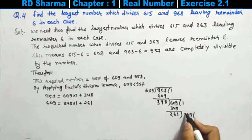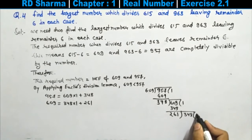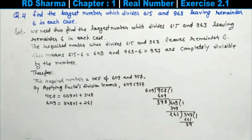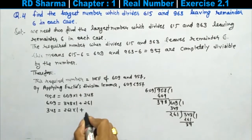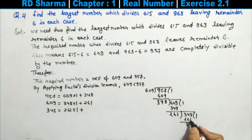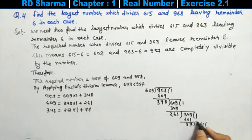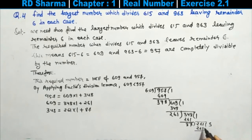Now we divide 348 by 261. We get 348 equals 261 into 1 plus 87. Then we check: 261 divided by 87 — since 87 times 3 equals 261, the remainder is 0. So 261 equals 87 into 3 plus 0.